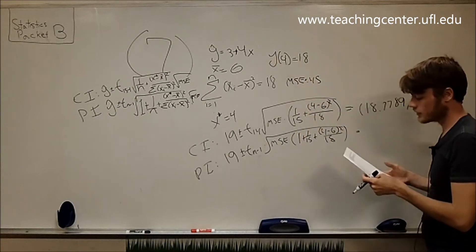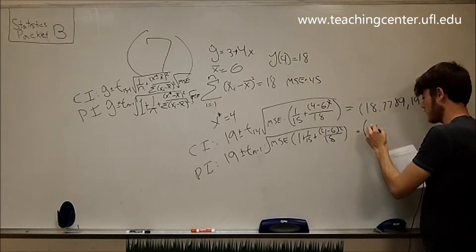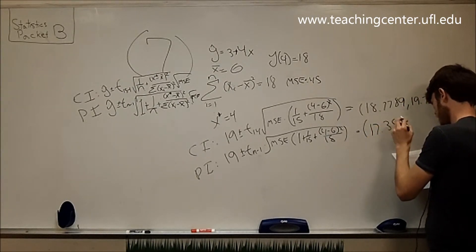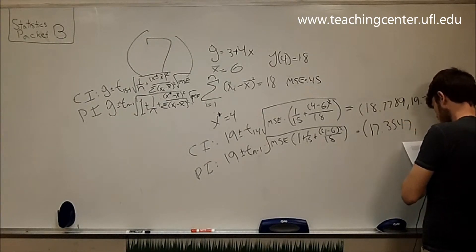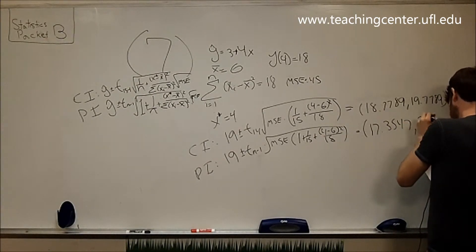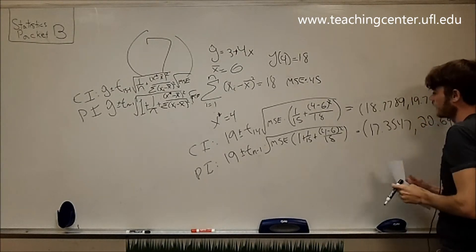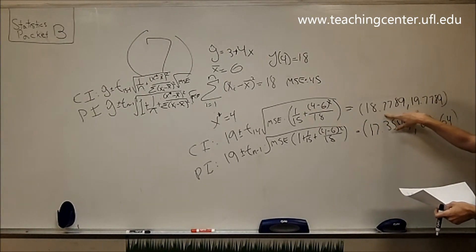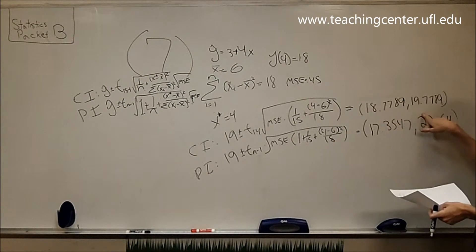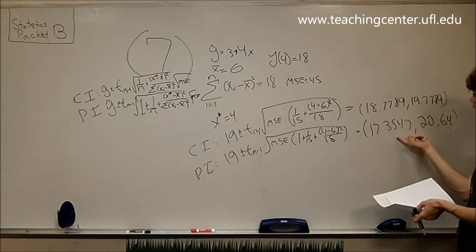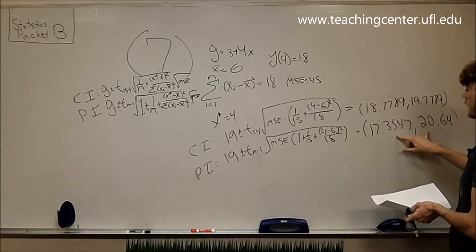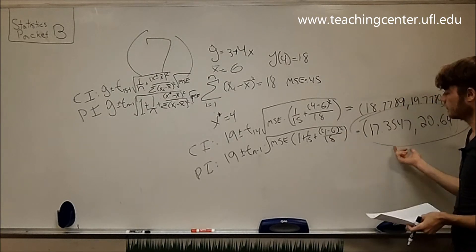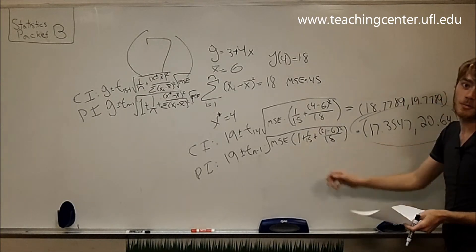And the reason these are such tight intervals is because MSE is so small, so we have a pretty good regression equation overall. For the confidence interval we get 18.7789 to 19.7789. And our prediction interval, this is just straight math. As you observe, this interval is small, this is only about a distance of 1, and this is a distance of about 3-ish, a little bit more than 3. Of course, as expected, this one's bigger, of just that one factor, so remember that.